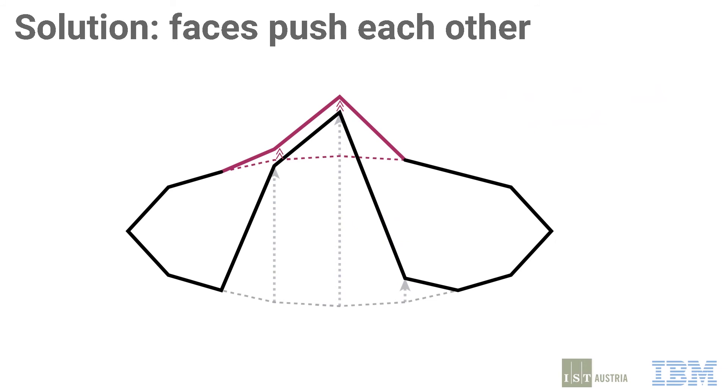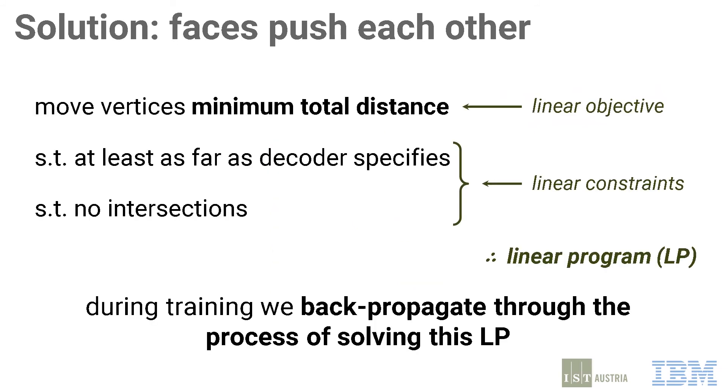Mathematically, this can be set up as a linear programming problem, and we solve it by incorporating a standard LP solver inside our network in each training iteration. We also show how to propagate gradients back through this process.